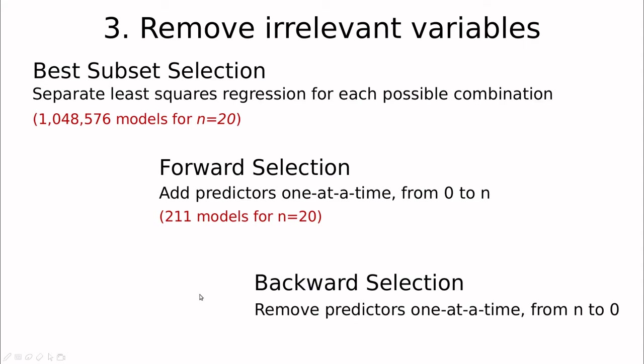We can do the opposite so we start with all the predictors at once and then remove one by one, and in this case we are playing with the same number of predictors and the same combinations so again we will have 200 models.